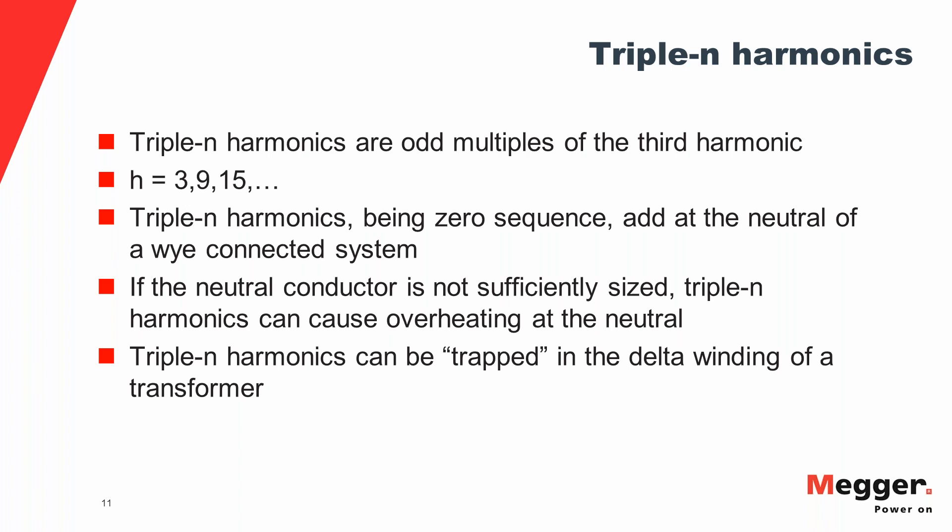The neutral is grounded. So if there is a lot of zero-sequence harmonics in the system, all of that will flow through the neutral, and if the neutral is not sufficiently sized, there will be overheating of the neutral conductor. Additionally, zero-sequence or triple N harmonics can be trapped in the delta winding of a transformer. One main function of the delta winding is to provide a circulating path for zero-sequence currents. On a grounded Y-delta system, zero-sequence currents flow into the Y winding and down to the neutral, but on the delta side they circulate within the delta winding and do not propagate further through the system.